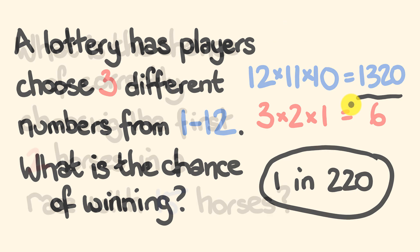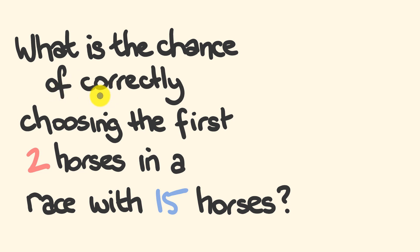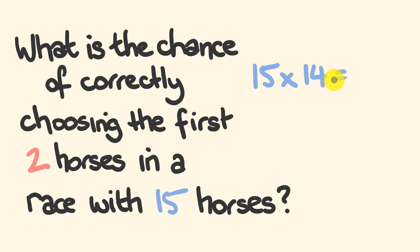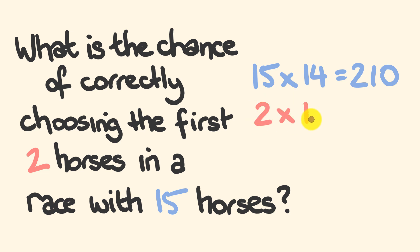Now let's have a look at another example. What is the chance of correctly choosing the first two horses in a race with 15 horses? We're selecting 2 from 15. So starting with 15 horses, we multiply down in descending consecutive order two times: 15 multiplied by 14, that's 210. Now we divide this by the number of different ways we could arrange two horses — that's 2 multiplied by 1, which equals 2. So 210 divided by 2 is 105.